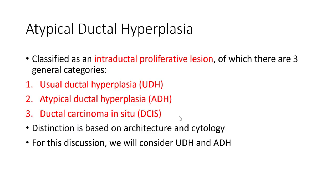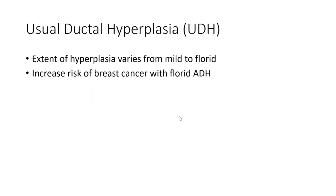We will now consider usual ductal hyperplasia and atypical ductal hyperplasia. For usual ductal hyperplasia, the extent can vary from mild to florid, and it's really the florid form that's more clinically important. Florid usual ductal hyperplasia does have an increased risk for developing breast cancer and fits within that proliferative breast disease category.